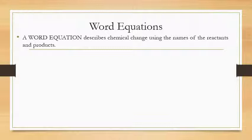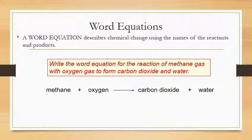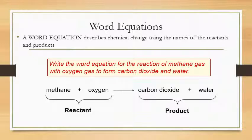There are two ways to represent a chemical change: a word equation and a chemical equation. A word equation describes a chemical change using the names of the reactants and products. For example, write the word equation for methane gas reacting with oxygen gas to form carbon dioxide and water. The answer is: methane + oxygen → carbon dioxide + water. The methane and oxygen are the reactants, and carbon dioxide and water are the products.